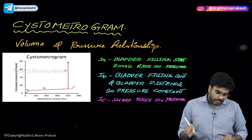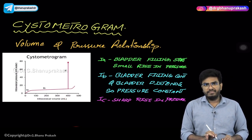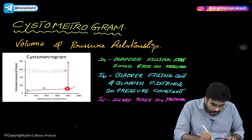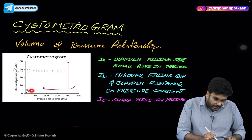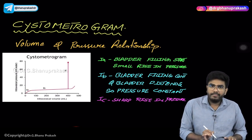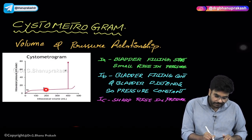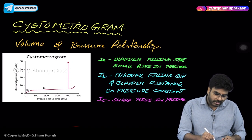As urine volume continues to increase and reaches 400 ml, the bladder can no longer stretch further, and pressure starts to spike sharply. The graph is divided into areas: area 1a is the initial phase where bladder filling starts with a small rise in pressure; area 1b is the phase where the bladder continues to fill while also distending, keeping pressure constant; and area 2 is when intravesical volume reaches 400 ml and there is a sharp rise in pressure.